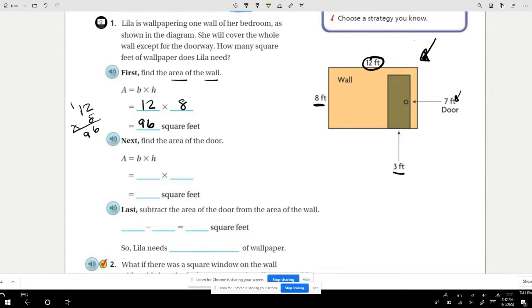Now we need the area of the door. The area of the door has a base of 3 and a height of 7, making the square feet 21. The last thing we're going to do is subtract from the area of the wall, which is 96, minus the area of the door. Give yourself a little scratch paper so you don't make careless mistakes, and we get 75 square feet. So Lila needs 75 square feet of wallpaper.